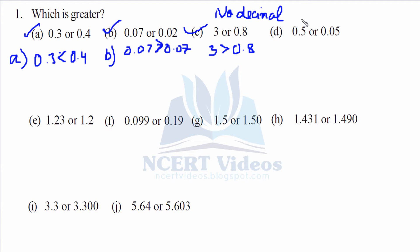Part d: in the tenths place we have 5, whereas in the other we have 0. Clearly 5 is greater, therefore 0.5 is greater than 0.05. That makes our part d.